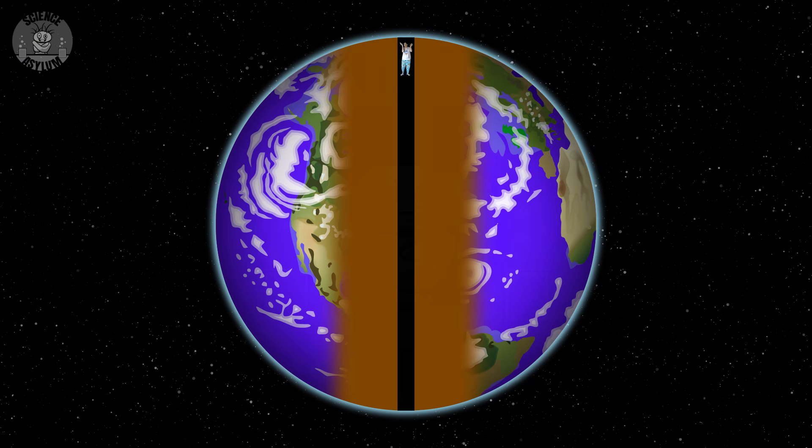What if we dug a hole all the way through the Earth? How long do you think it would take someone to fall all the way through? About 40 minutes. That's it. Just 40 minutes.